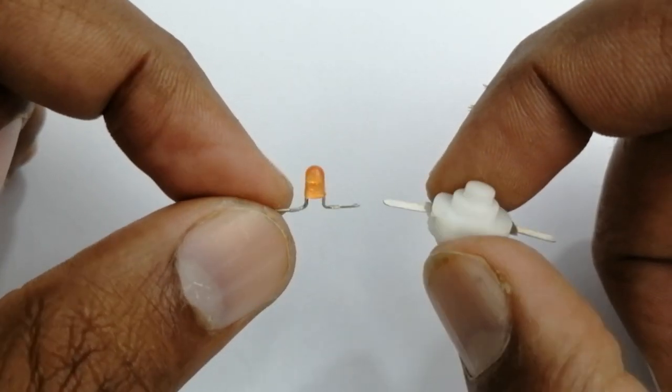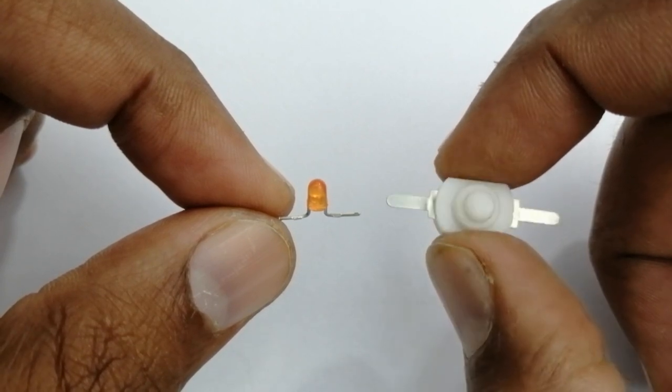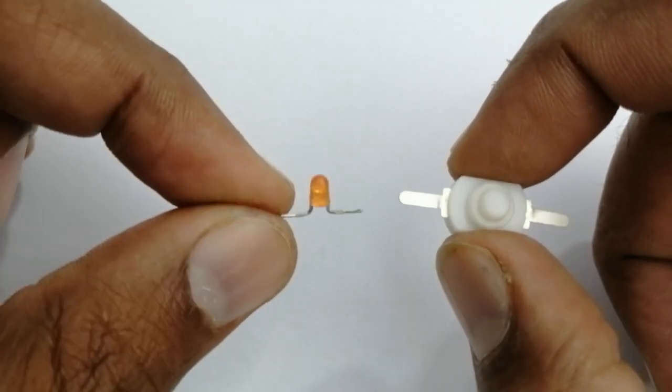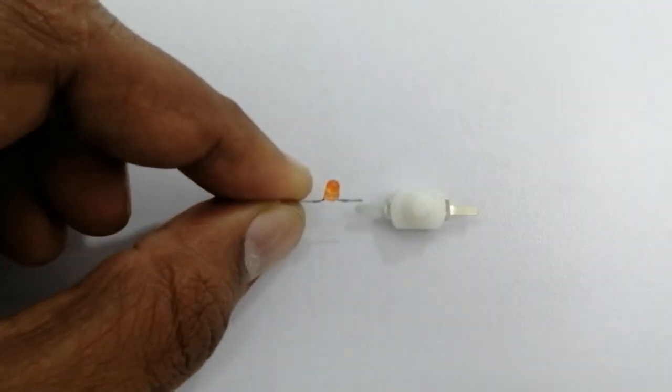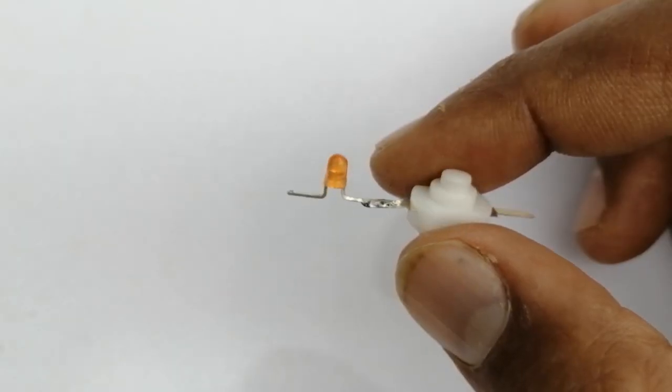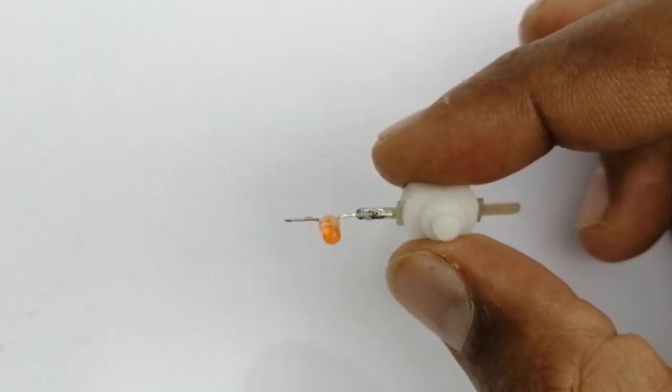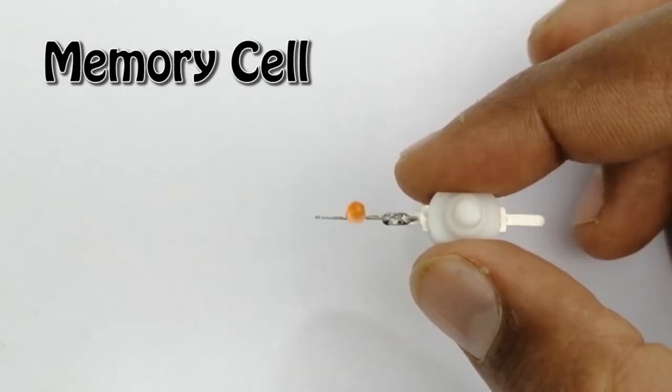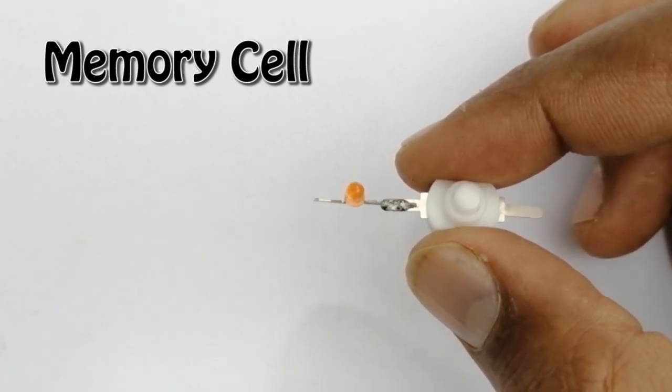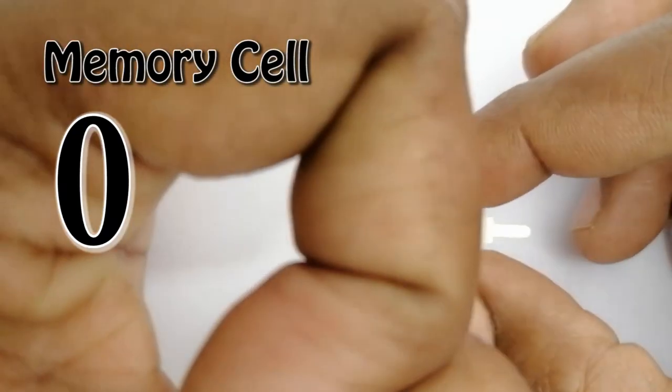I have a switch in one hand and an LED light in my other hand. We connect these. We have created a memory cell by connecting the switch to the LED. A memory cell can store a bit. This bit can be one. This bit can be zero.